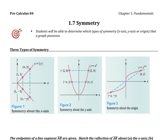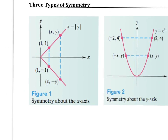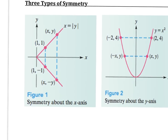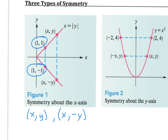The first type is symmetry about the x-axis. The big idea here is that for every point on the graph at (x, y), there is another point on the graph that has the same x value but the exact opposite y value. You can see this with the points (1, 1) and (1, -1) — the x values are the same but the y's are opposites.